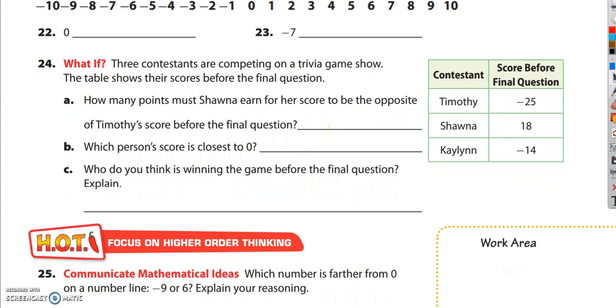Number 24 says, what if three contestants are competing on a trivia game show. The table shows their scores before the final question. Question A reads, how many points did Shauna earn for her score to be the opposite of Timothy's score before the final question? Now, Shauna has 18. The question is trying to get her to the opposite of Timothy's score. Well, Timothy's score is negative 25. The opposite of that would be positive 25. So what would Shauna need to do to get from 18 to 25? She would need to score 7.